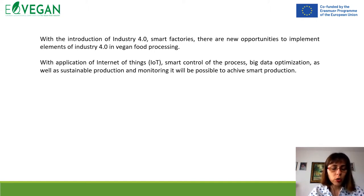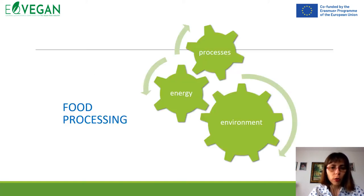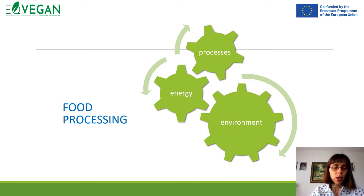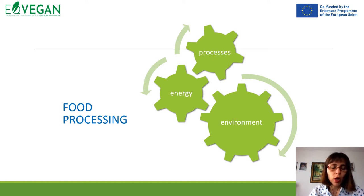It is necessary to optimize production and also to achieve smart industry and smart production. For vegan food processing, we need to have sustainable processing in mind. Under sustainability and sustainable processing, we need to think about the impact on the environment, society, and economy. Therefore, for food processing, we need processes that will use less energy, produce lower carbon footprint, and reduce impact on the environment.